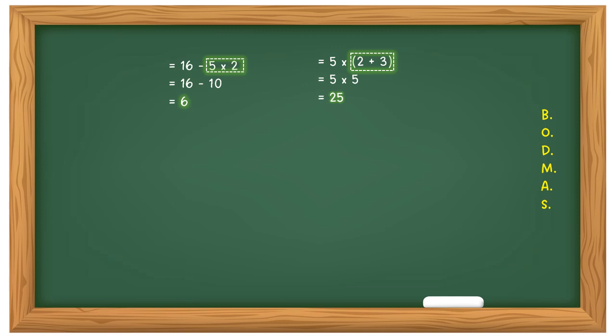You don't have to add the equal sign at the front — that's just my own way of doing things — but as long as you follow that process and show the step-by-step logical process, you must come to the correct conclusion when dealing with BODMAS.